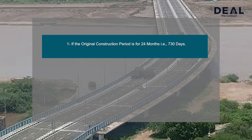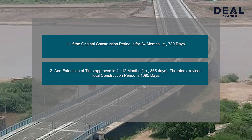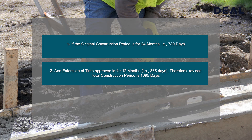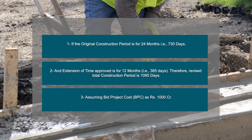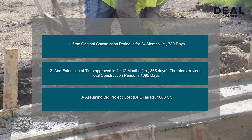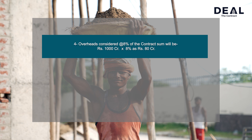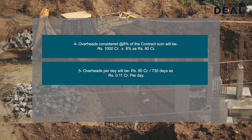If the original construction period is 24 months, i.e. 730 days, and the extension of time approved is 12 months, i.e. 365 days, the revised total construction period is 1,095 days. Assuming a bid project cost (BPC) of Rs. 1,000 crores, overheads considered at 8% of the contract sum will be Rs. 1,000 crores × 8% = Rs. 80 crores, i.e. Rs. 0.11 crores per day.